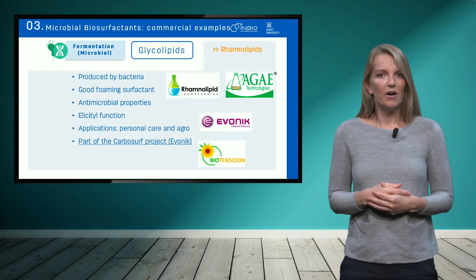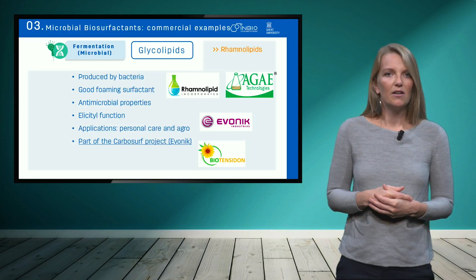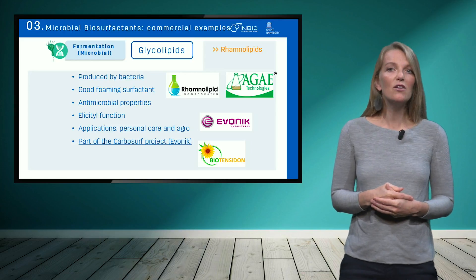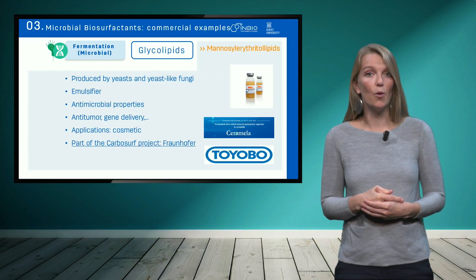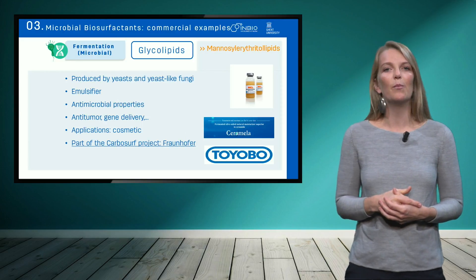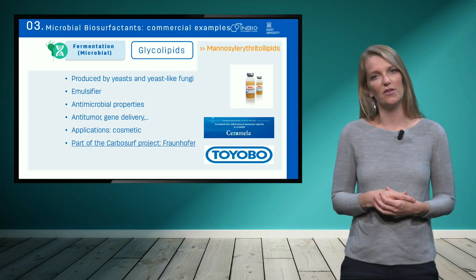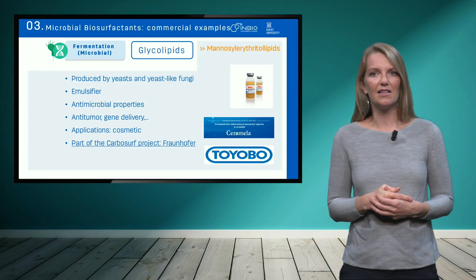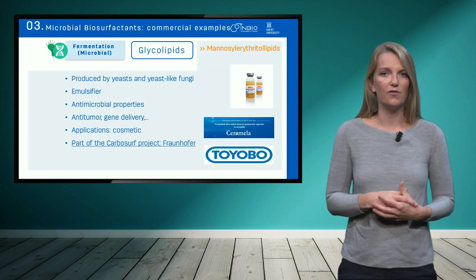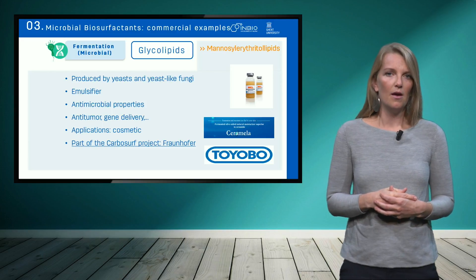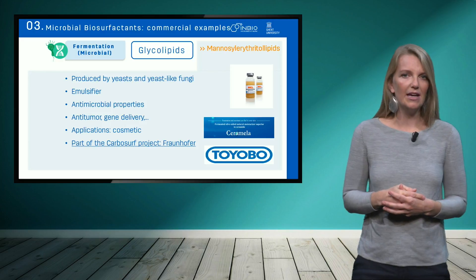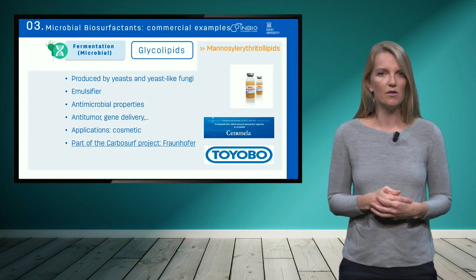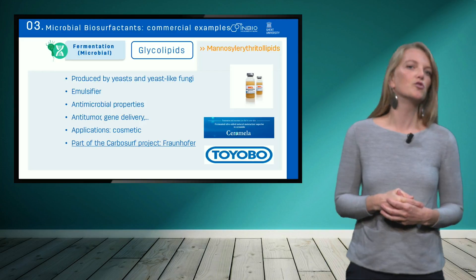This mechanism is called plant vaccination. Rhamnolipids are currently put on the market by Evonik under the trade name Rhianz1. Mannosylerythritol lipids, or MELs, are another example of already commercialized biosurfactants. These are produced by yeast and yeast-like fungi and have good emulsification properties. MELs are mainly commercialized in Asia in a number of cosmetic and hair care products, for example by a company called Toyobo.